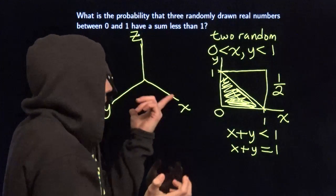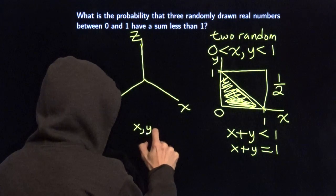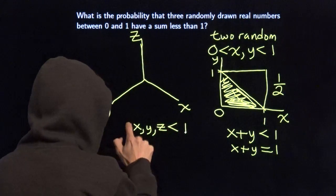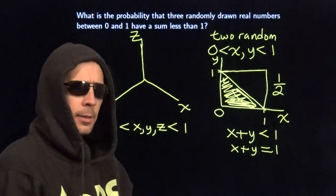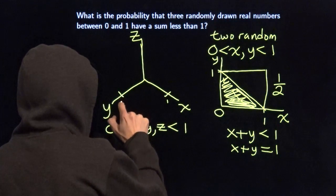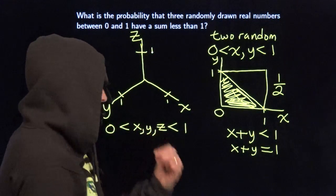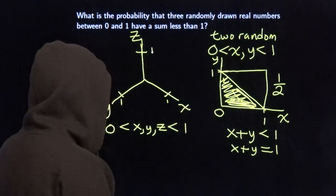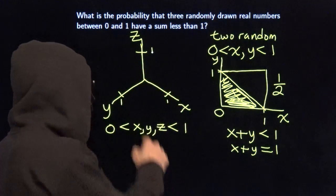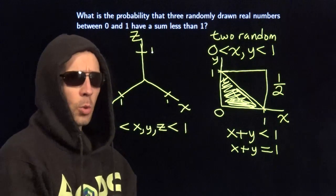And we still want these three numbers. This X, Y, and Z. We want them all to be between 0 and 1. So we'll call this 1. We'll call this 1. We'll put 1 right up there. We need X, Y, and Z all to be between 0 and 1. So we need X between 0 and 1. Y between 0 and 1. Z between 0 and 1.